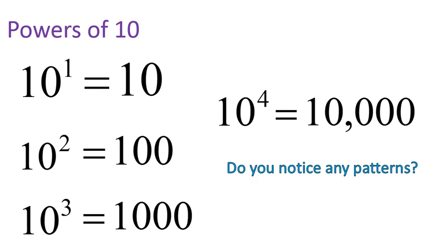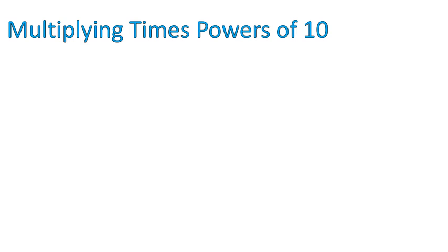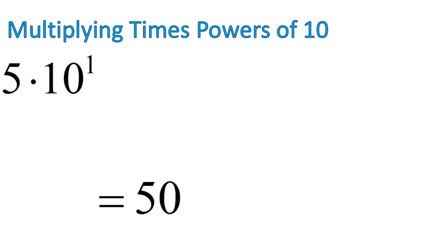The other pattern that I noticed, and you might have overlooked this, is you are shifting. When you're adding a zero, what you're really doing is shifting a decimal. So what we're doing is moving the decimal farther and farther to the right. That's probably a better way to think about it, and I'll tell you why when we get to the next couple of slides. Let's take a look. What happens when we multiply times the power of 10? Well, 5 times 10 to the power of 1 is 50.